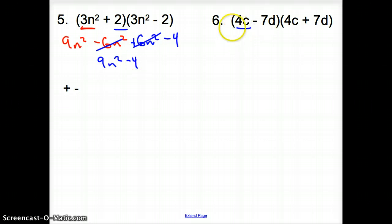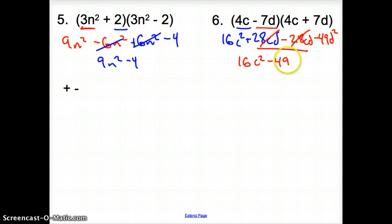Again, over here with number 6, starting with 4c, is 16c squared, then times the 7, which is plus 28cd. Now I'm moving on to the negative 7. So it's a negative 28cd, and then a negative 49d squared. Now we simplify these two are the opposite terms, so we can cancel them out. Now it's 16c squared minus 49d squared.